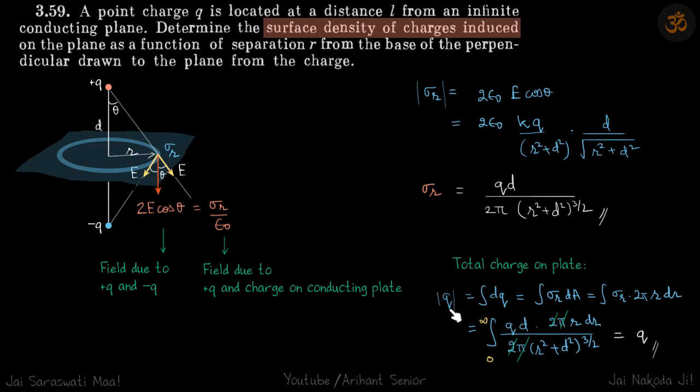The total charge on the plate is the integral of dq. dq is the charge on this ring, which will be sigma_r times dA, because sigma_r is the same on all positions of the ring, and dA is 2πr dr. If you put the value of sigma_r here, some things will cancel. Inside the integral, you will have r dr by (r² + d²)^(3/2).